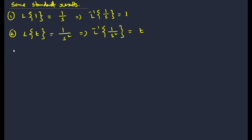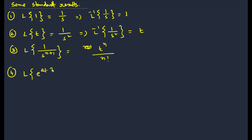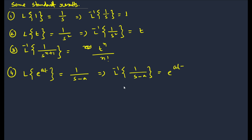We just saw that the inverse Laplace transformation of 1/s^(n+1) is t^n / n factorial, where n can be any natural number. Then the Laplace transformation of e^(at) is 1/(s − a), so the inverse Laplace transformation of 1/(s − a) will be e^(at).